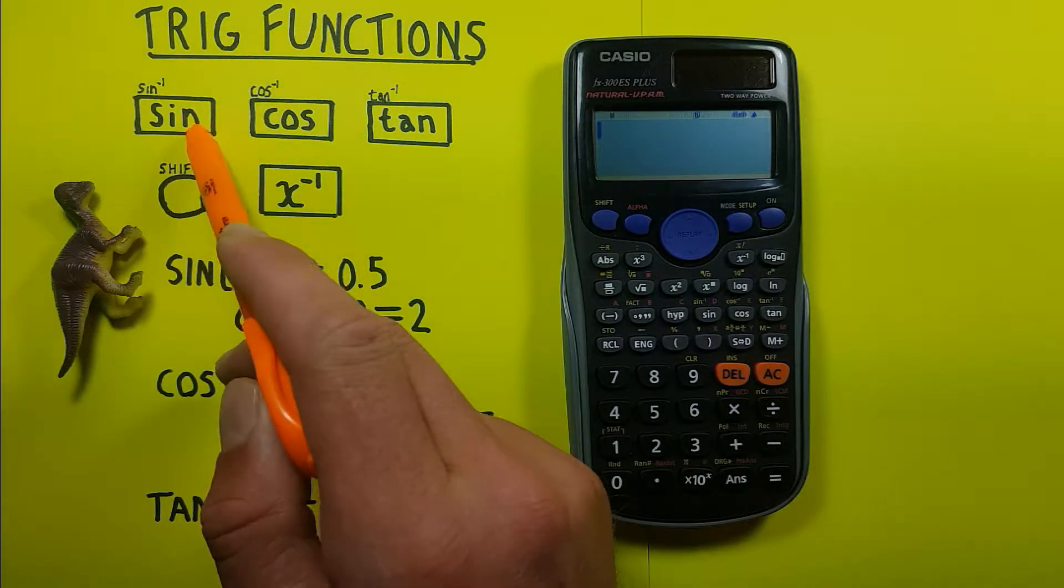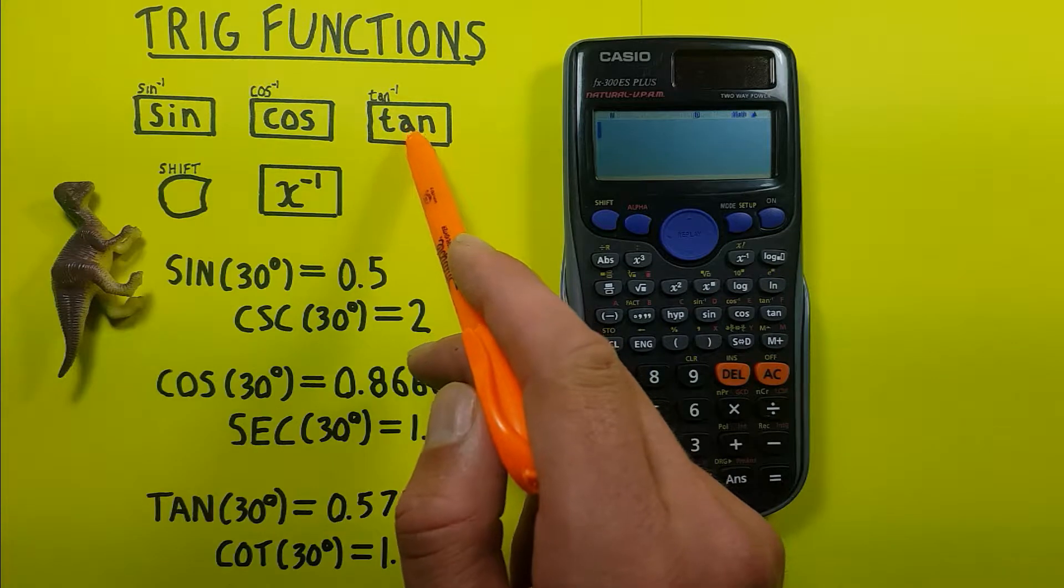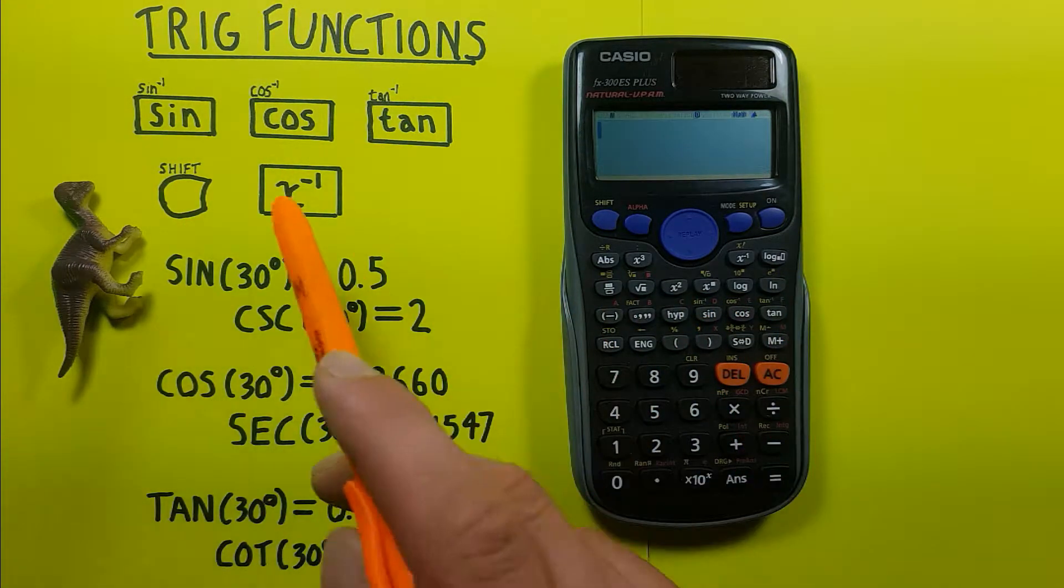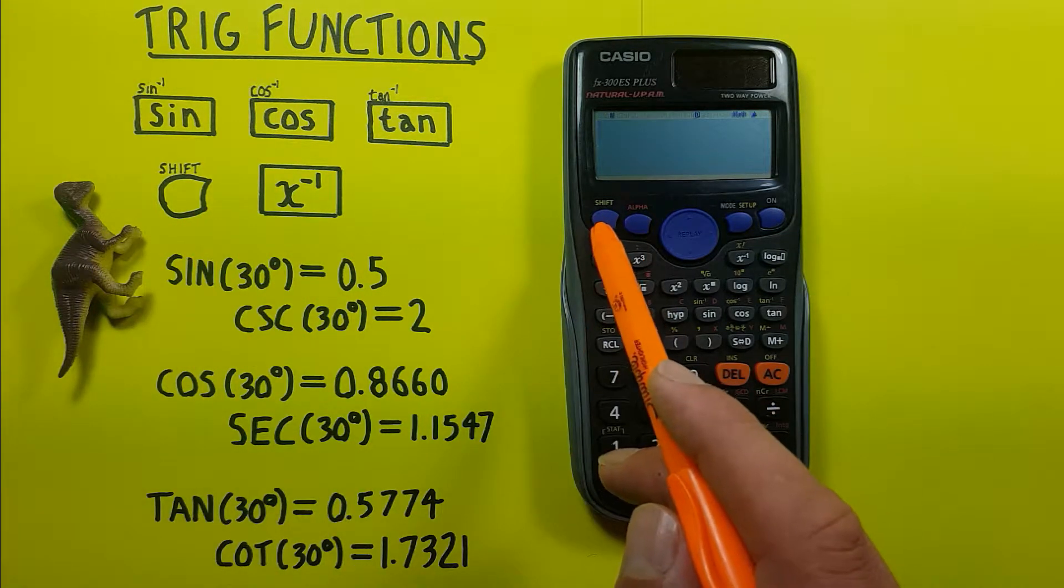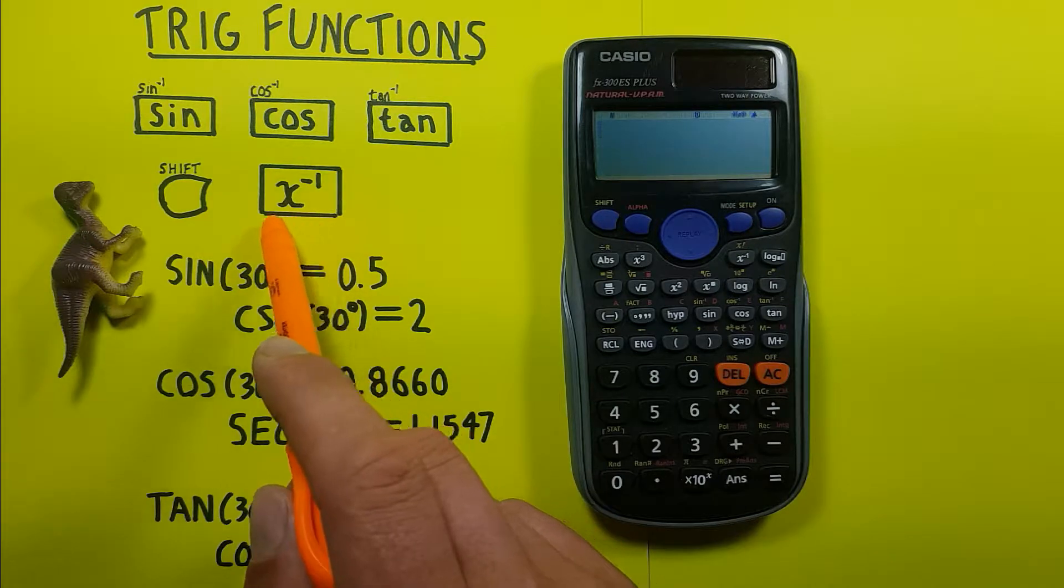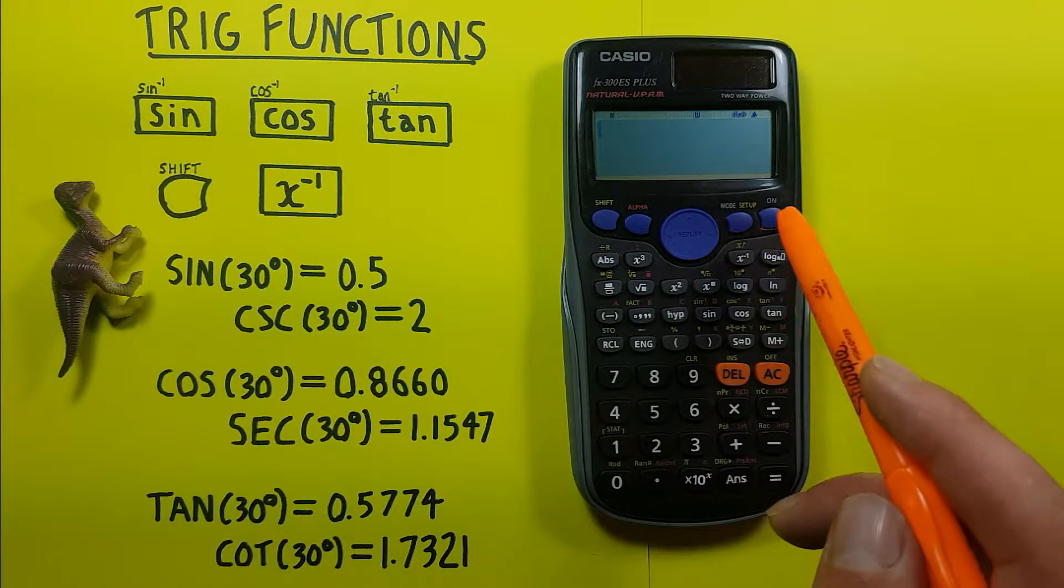To do this we'll be using the sine, cos, and tan keys located here, as well as the shift key located up here in the top left, and the x to the power of minus 1 or inverse key located here.